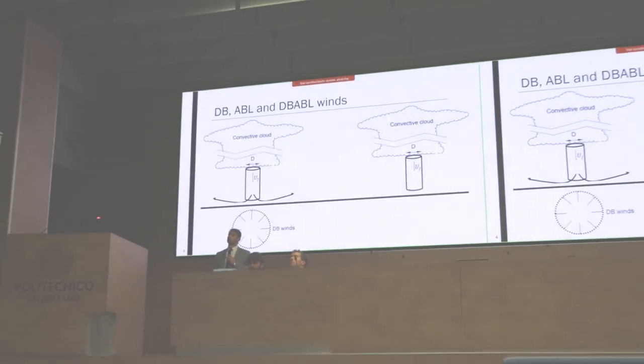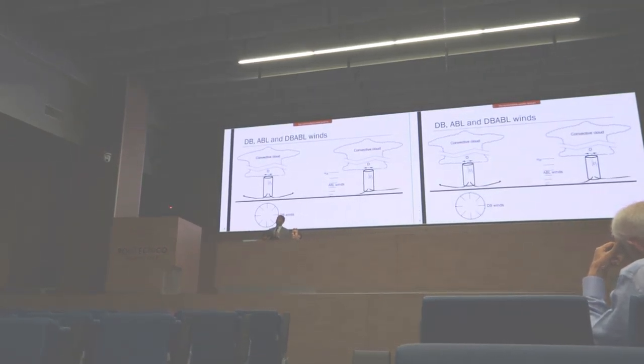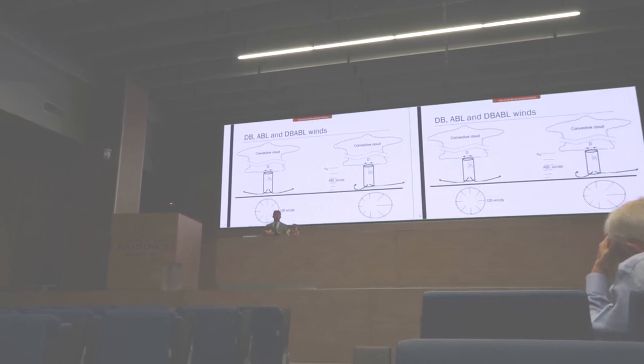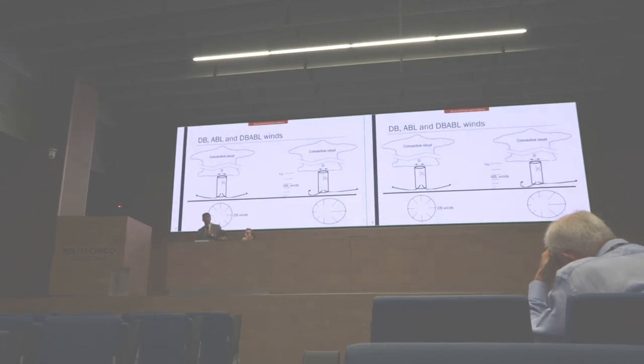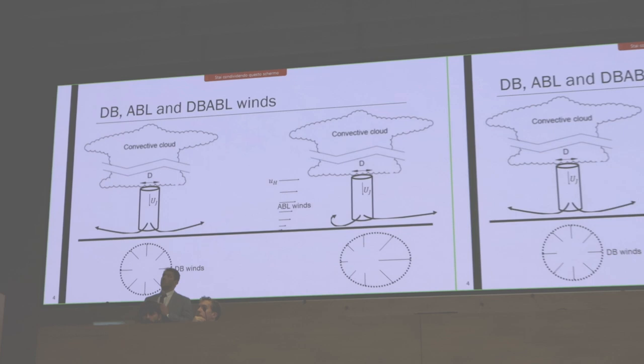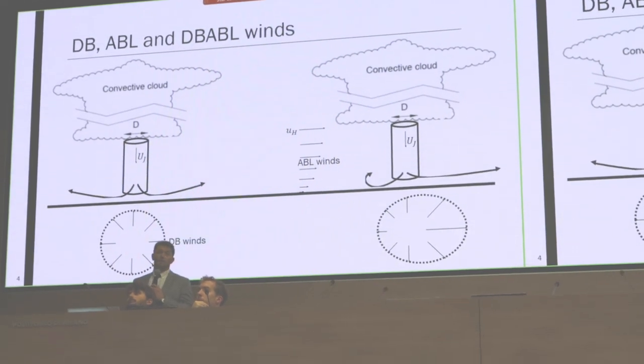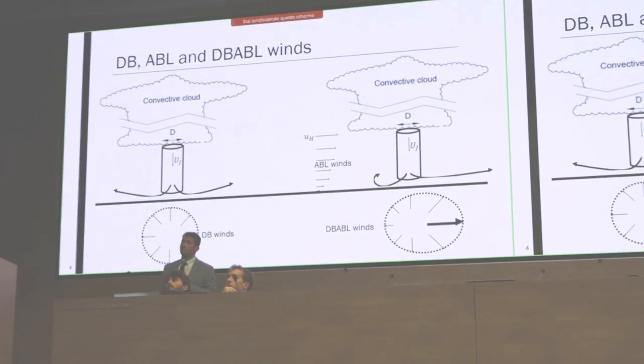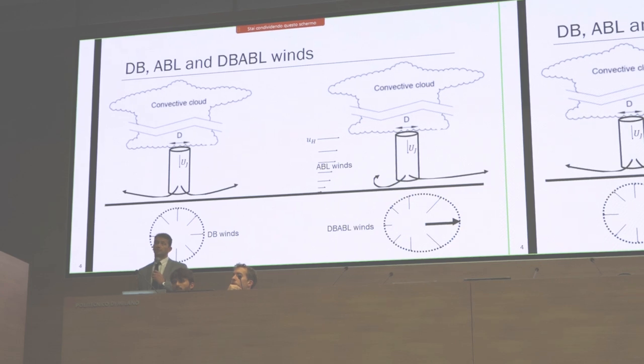Now if we have the same thing but supplement ABL winds, it's logical to expect that the outflow will be affected and there will be bias in the outflow. We can expect that the outflow will be biased towards the direction of ABL winds. Here UH is the ABL velocity at the cloud base height. My student looked into these flows and the model he developed works only for the part of the outflow where DB winds and ABL winds are in the same direction.